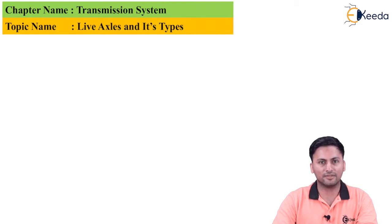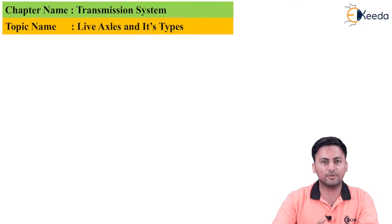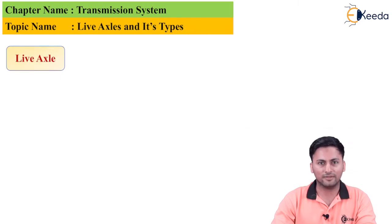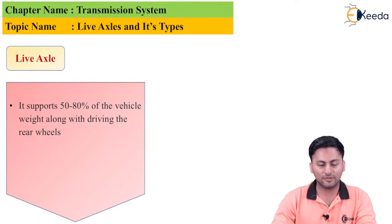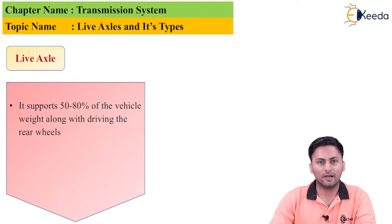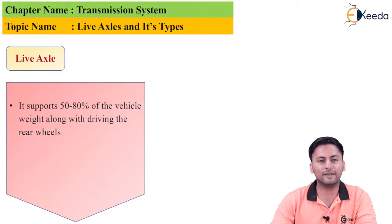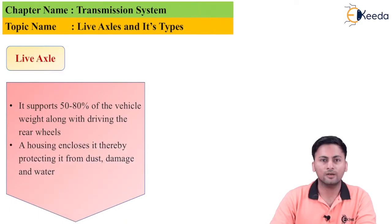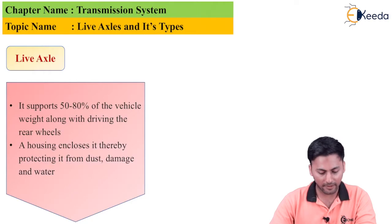A live axle is a very important part in the automobile transmission system. The entire weight of the assembly needs to be distributed, and the live axle plays a very important role in that. It supports 50% to 80% of the vehicle weight, while also helping in driving the rear wheels.